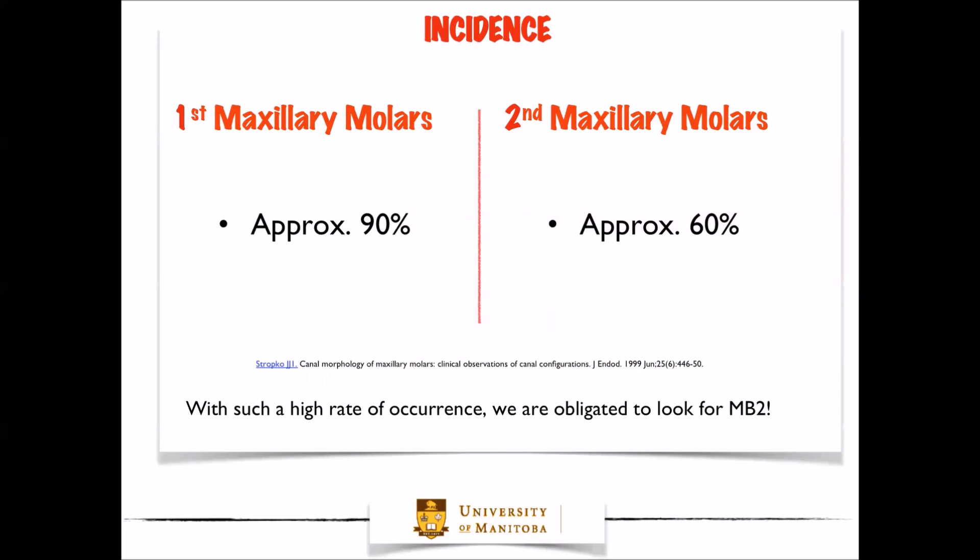When we look at both groups of teeth separately, there is approximately a 90% chance of finding a second mesobuccal canal in first maxillary molars, while the incidence decreases to 60% when analyzing the same canal in second maxillary molars. This was shown by Stropko's research study in 1999. With this data, and such a high rate of occurrence, we are obligated to look for mesobuccal canal number two.